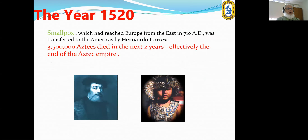In the year 1520, smallpox had reached Europe from the east in 710 AD, and was then transferred to America by Hernando Cortes. About 3.5 million people died in the next two years.